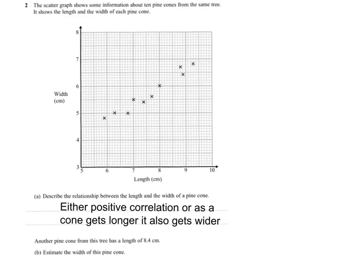Or you could simply say the longer the cone, the wider it tends to be. So either of those will be okay. I'll state them both so you can look at them. So either positive correlation or as the cone gets longer, it will get wider. Either of those will get you the mark.